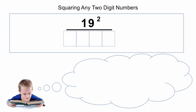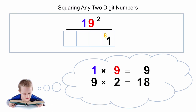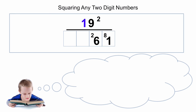Let's look at one final example: 19 squared. We look at the units — it's 9, so 9 squared is 81. Put down the 1 and carry the 8. The second step: take the tens digit and multiply it by the units. The tens digit is 1, so 1 times 9 is 9. We double this: 9 times 2 is 18. We have an 8 from the carry, so 18 plus 8 is 26. Write down the 6 and carry the 2. Final step: square the tens digit — 1 times 1 is 1. We have a 2 from the carry, so 1 plus 2 is 3. There's our answer: 361.